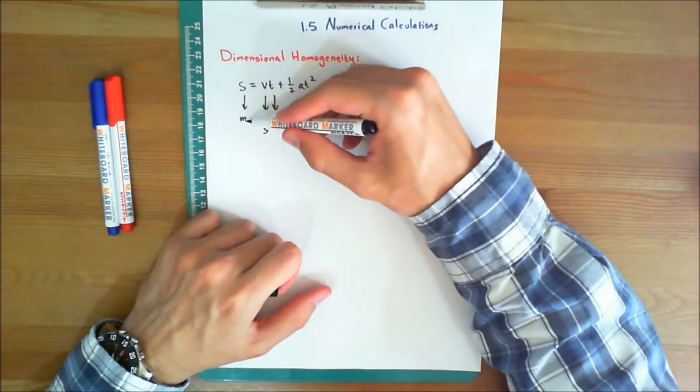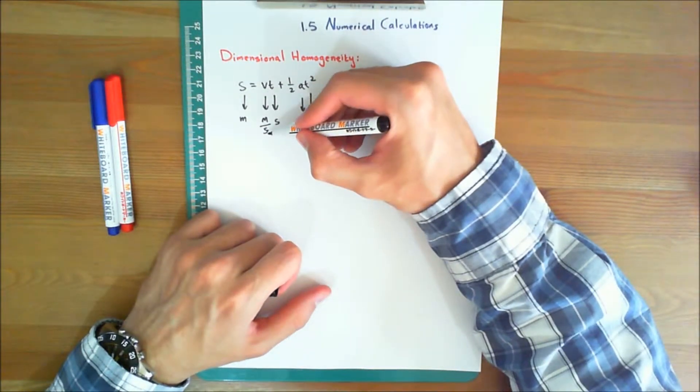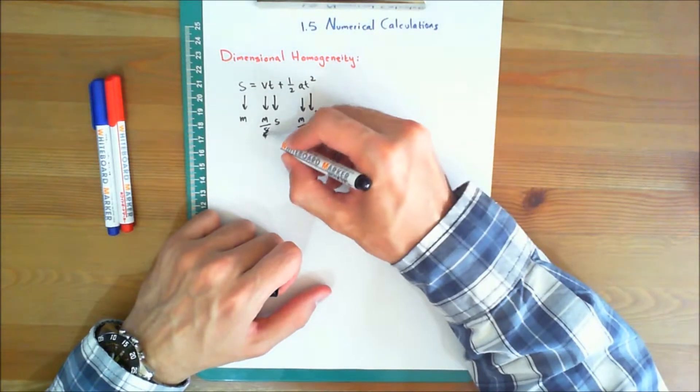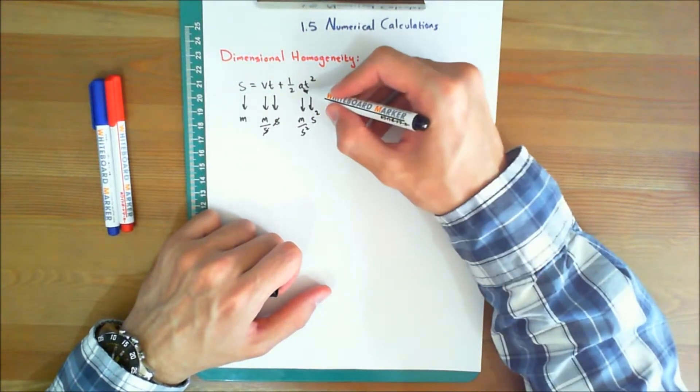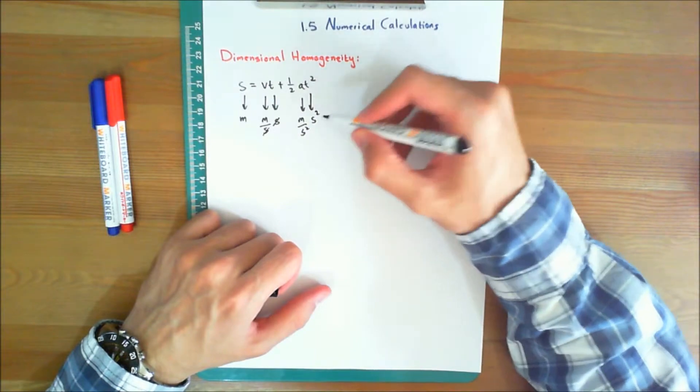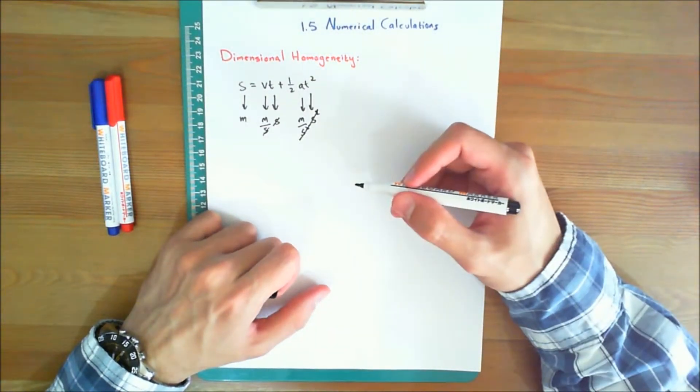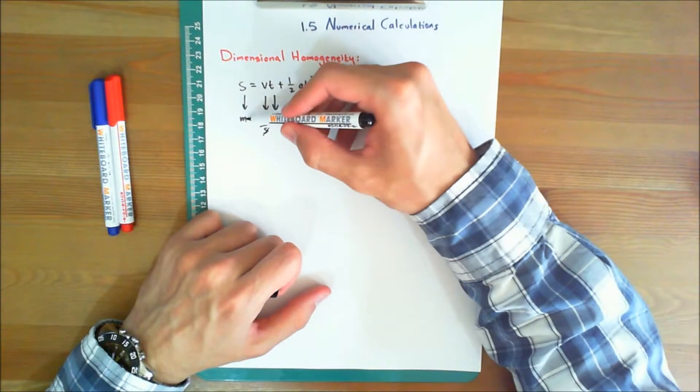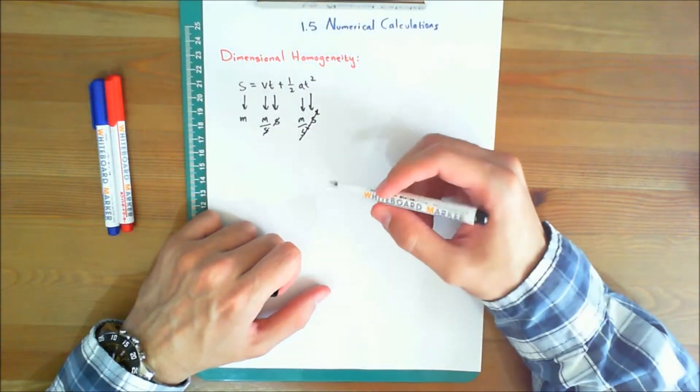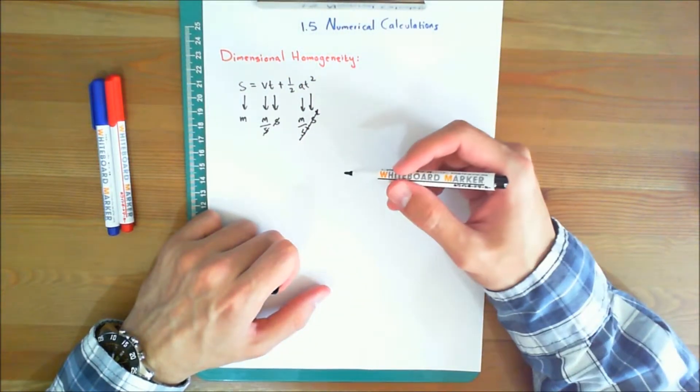Since S is in meters, V is in meters per second, T is in seconds, so you can cancel out the seconds. A is in meters per second squared, and T is in seconds squared, you can cancel out the seconds squared. Therefore, you can see meters, meters, and meters. It maintains its dimensional homogeneity.